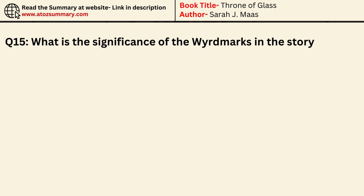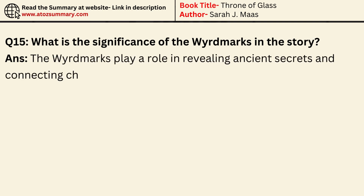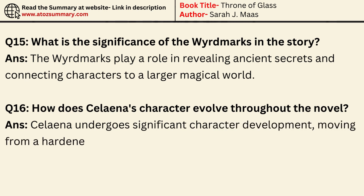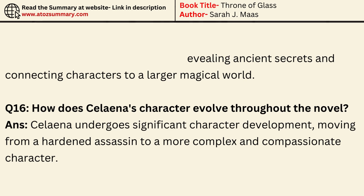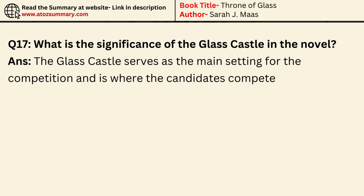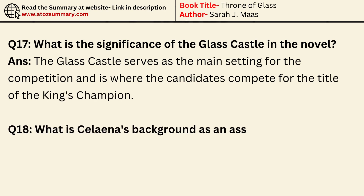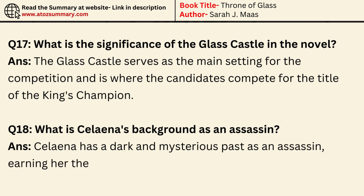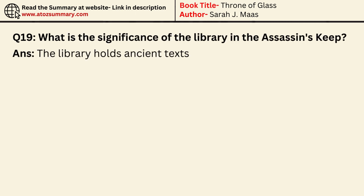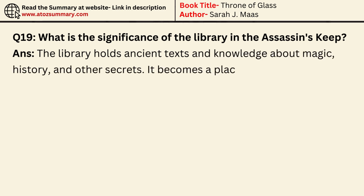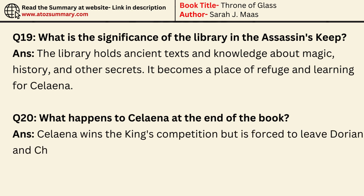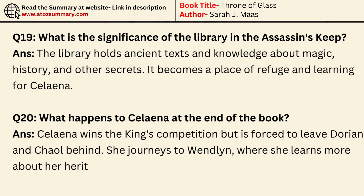What is the significance of the wordmarks in the story? The wordmarks play a role in revealing ancient secrets and connecting characters to a larger magical world. How does Selina's character evolve throughout the novel? Selina undergoes significant character development, moving from a hardened assassin to a more complex and compassionate character. What is the significance of the glass castle? The glass castle serves as the main setting for the competition and is where the candidates compete for the title of king's champion. What is Selina's background as an assassin? Selina has a dark and mysterious past, earning her the title of Adarlin's assassin. What is the significance of the library? The library holds ancient texts and knowledge about magic, history, and other secrets — it becomes a place of refuge and learning for Selina. What happens to Selina at the end of the book? Selina wins the king's competition but is forced to leave Dorian and Kale behind. She journeys to Wenlin, where she learns more about her heritage and powers.